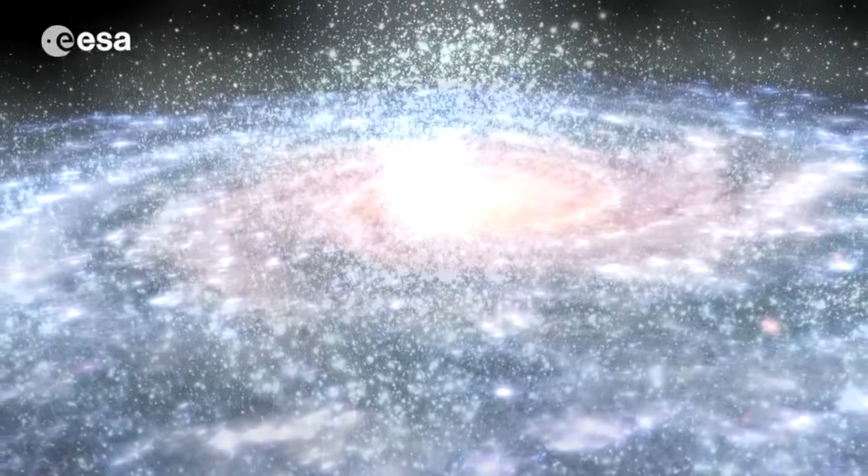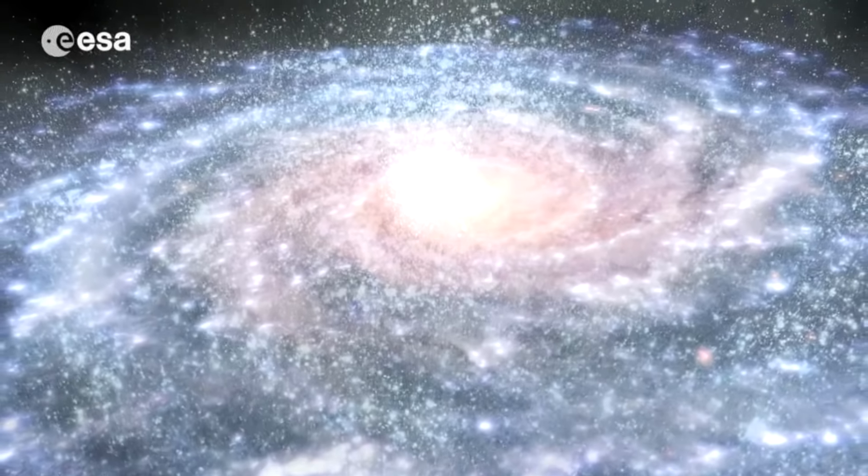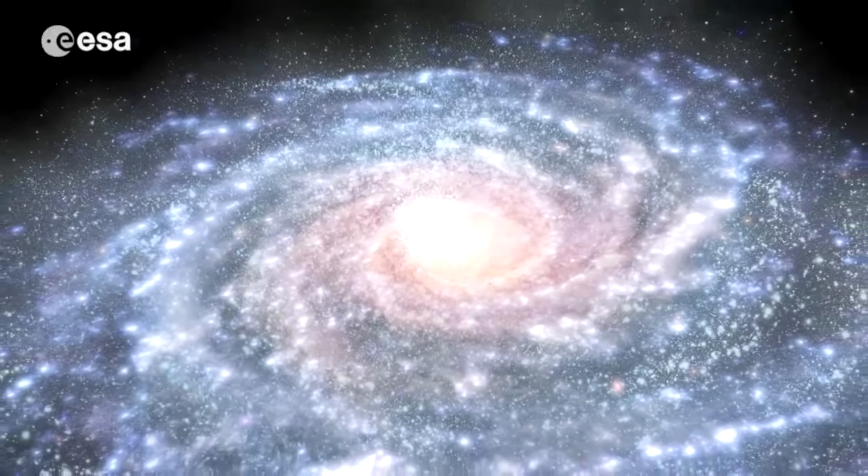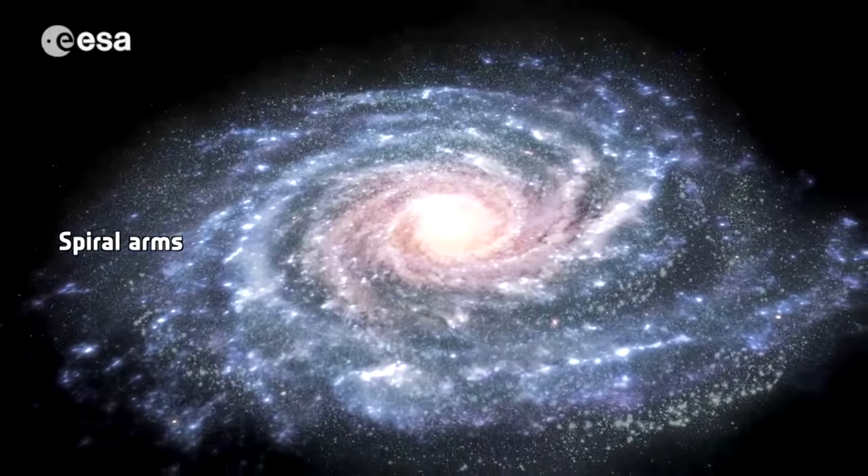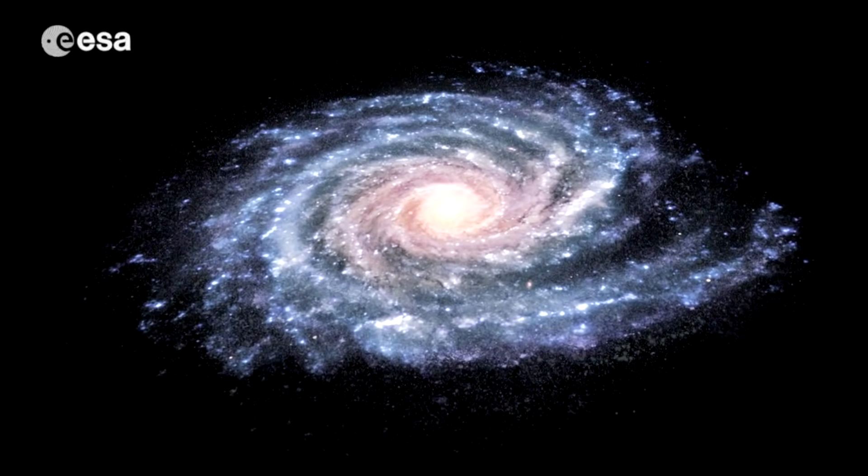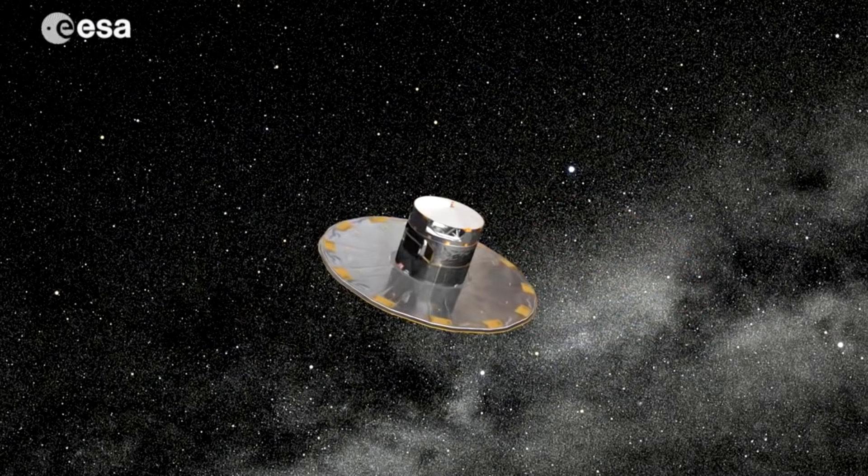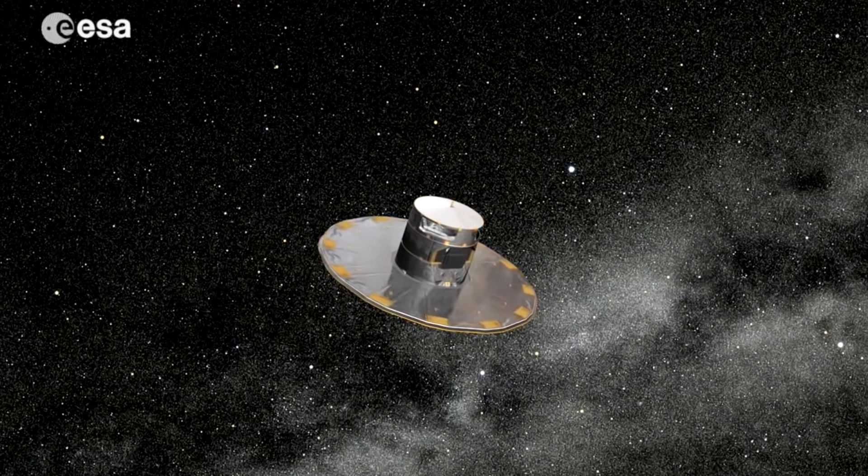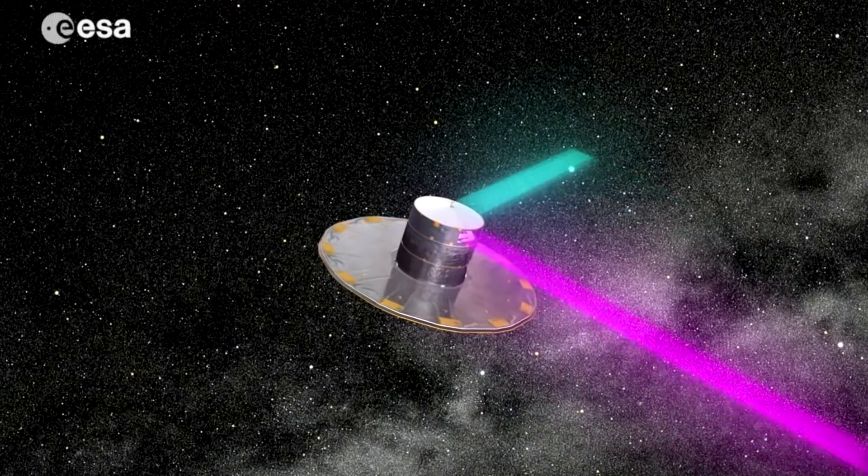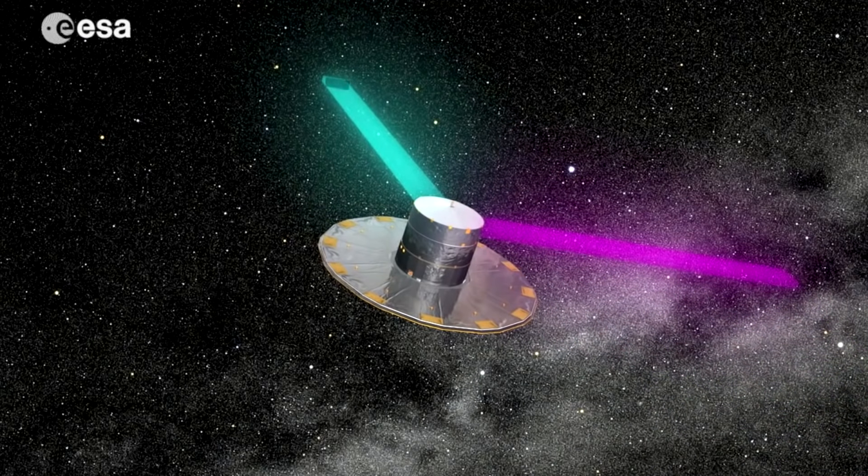Gaia is an ambitious mission to chart a three-dimensional map of our galaxy. Gaia will provide unprecedented positional and radial velocity measurements with the accuracies needed to produce a stereoscopic and kinematic census of about 1 billion stars in our galaxy. If you recall from our segment on nearby stars, Hipparcos recorded parallax information for 118,000 stars. Gaia will do over 8,000 times this number. Gaia will map each of the billion stars 70 times to record their position, movement, and characteristics. The key to this is the billion-pixel camera at the heart of the dual telescope. This animation illustrates how the camera works.